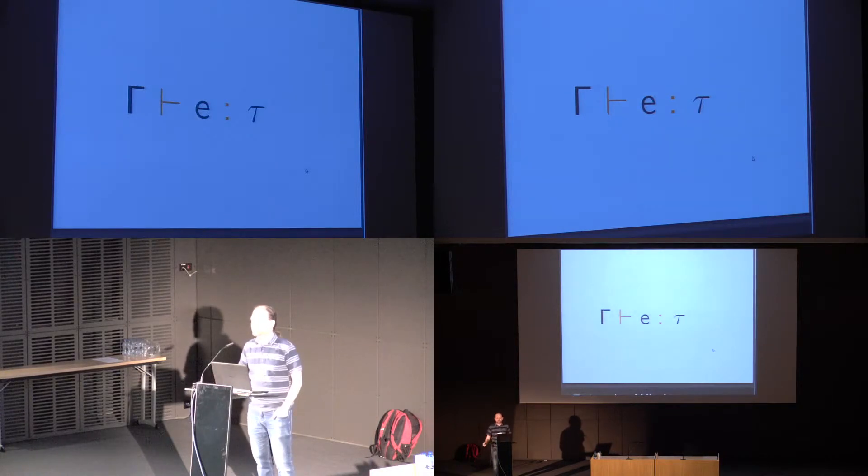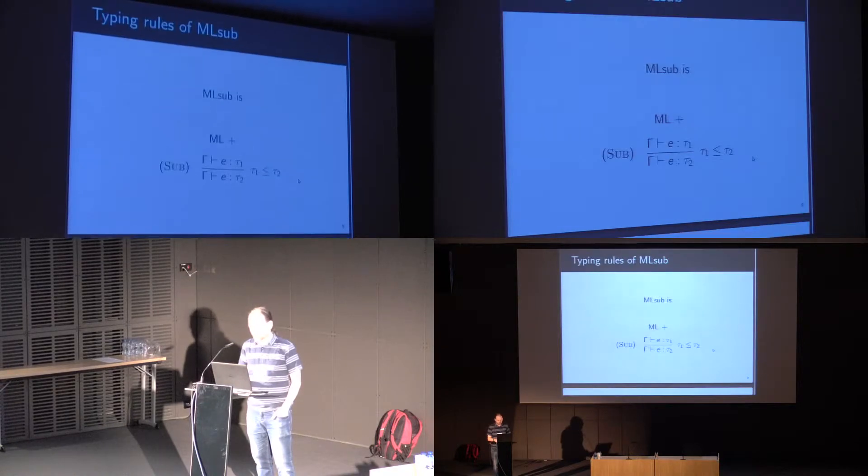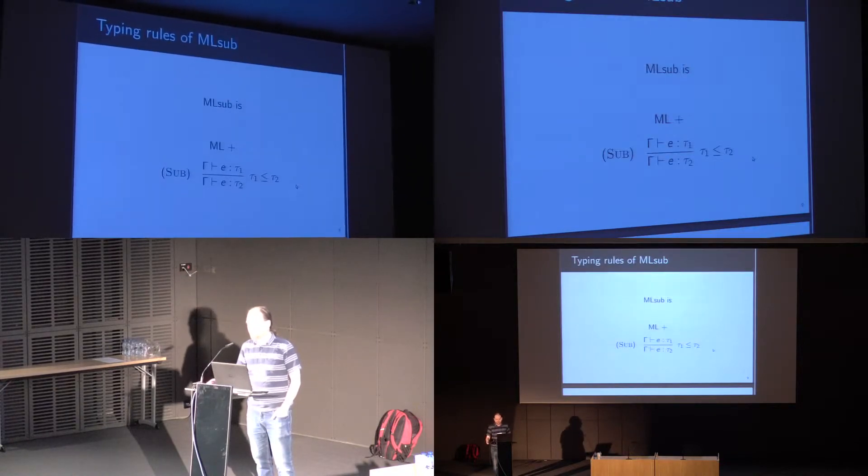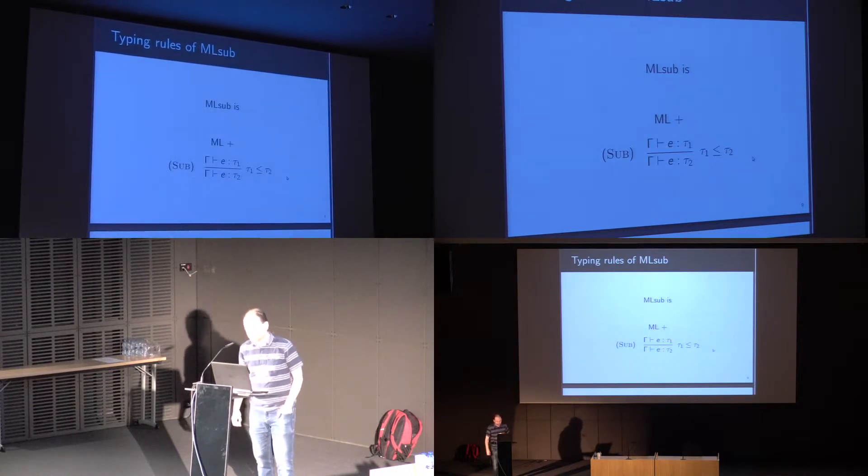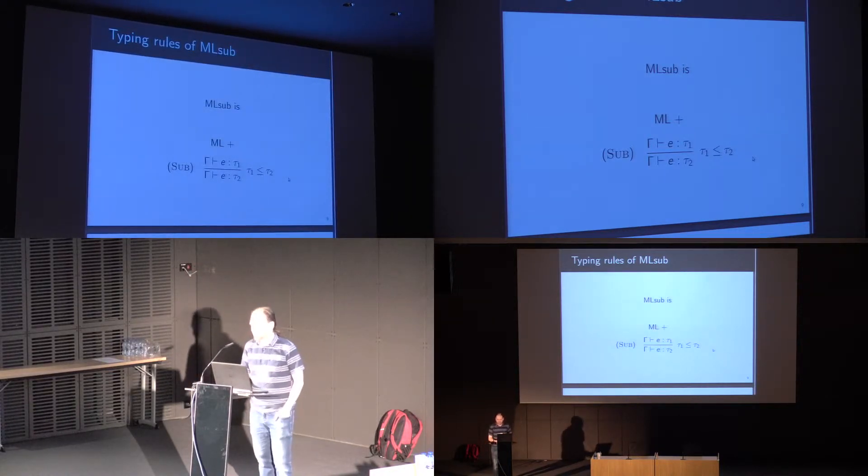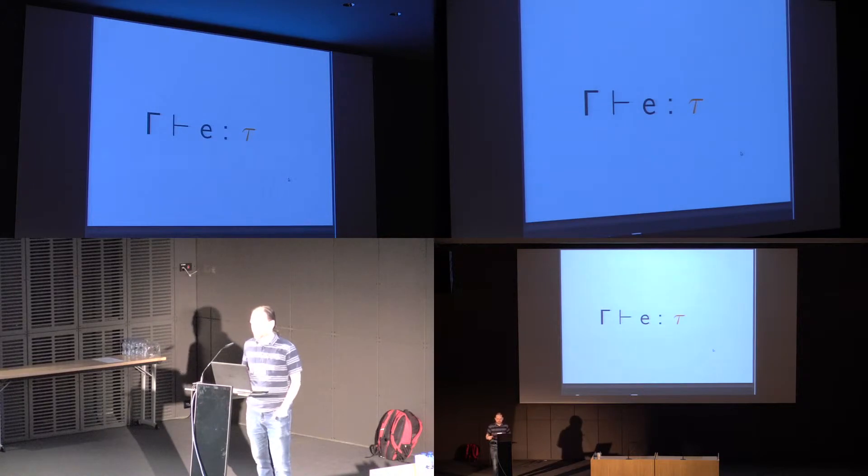Moving up on that, the next thing I would try to get you interested in would be the type system. I would show off some fancy new typing rules, but there's also nothing interesting going on there either, because the typing rules of ML-sub are the typing rules of ML to which we have added typing rule for subtype, the standard substitution rule. So the interesting thing in this system that I really want to talk about is T, the exact construction of the lattice of types in ML-sub.